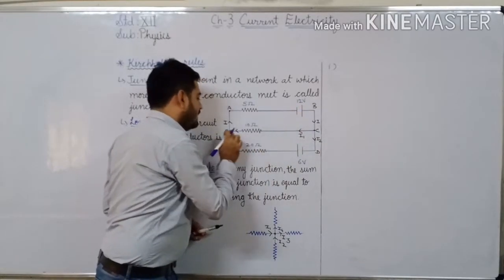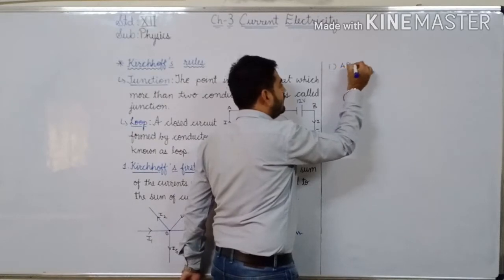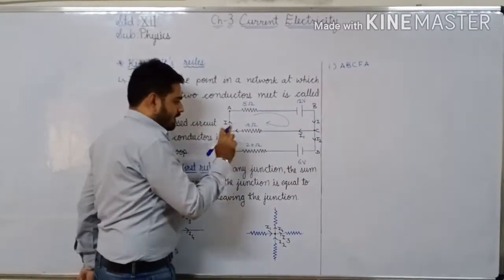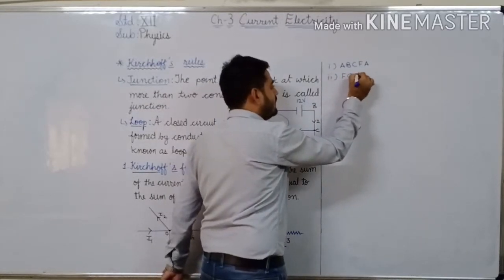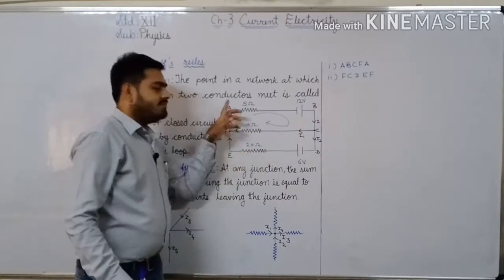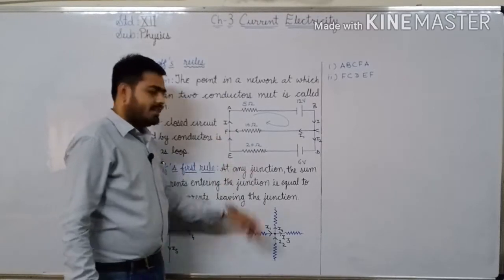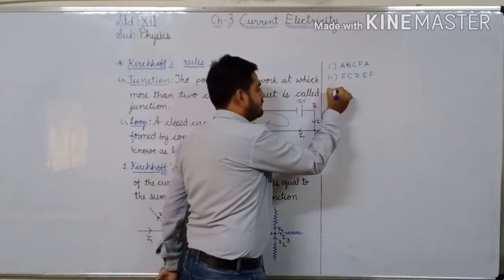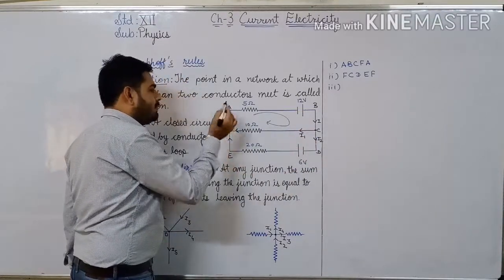For example, the path A, B, C, F, A forms a loop. That is nothing but a loop. Another loop is F, C, D, E, F — that is also a loop. A third loop is A, B, C, D, E, F, A — that is also a loop. So a closed circuit formed by conductors is known as a loop.